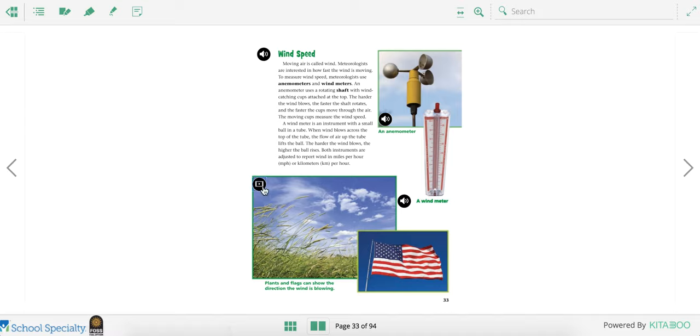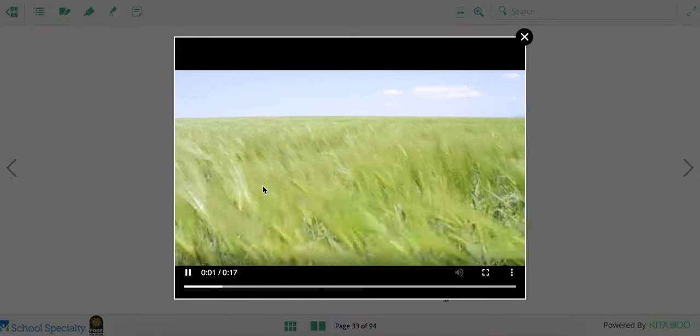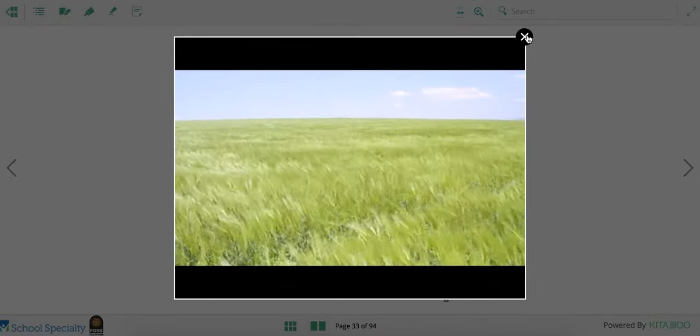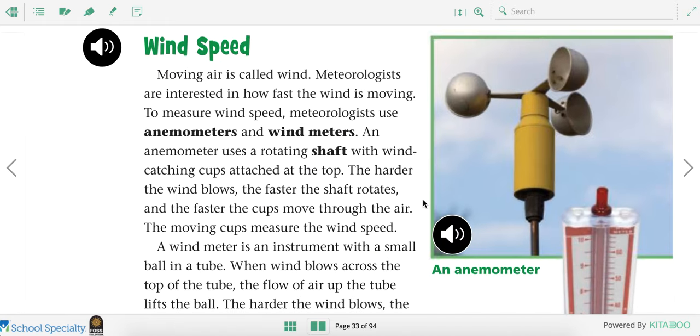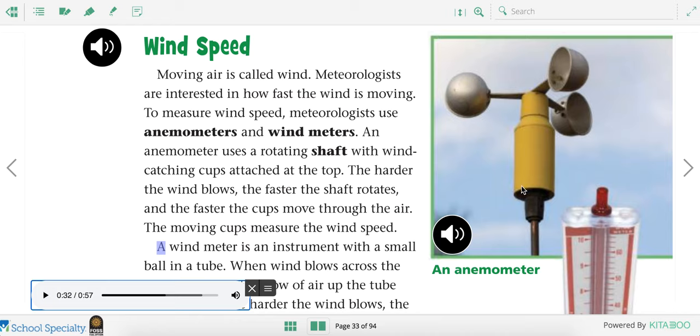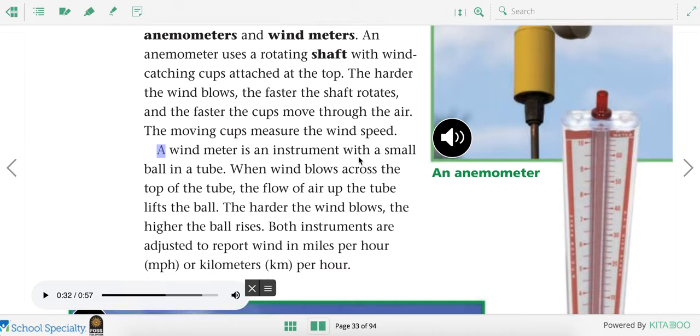Meteorologists also need to know about the wind. Wind speed. Moving air is called wind. Meteorologists are interested in how fast the wind is moving. To measure wind speed, meteorologists use anemometers and wind meters. An anemometer uses a rotating shaft with wind-catching cups attached at the top. The harder the wind blows, the faster the shaft rotates and the faster the cups move through the air. The moving cups measure the wind speed. So meteorologists use an anemometer like this to measure how fast or how hard the wind is blowing.